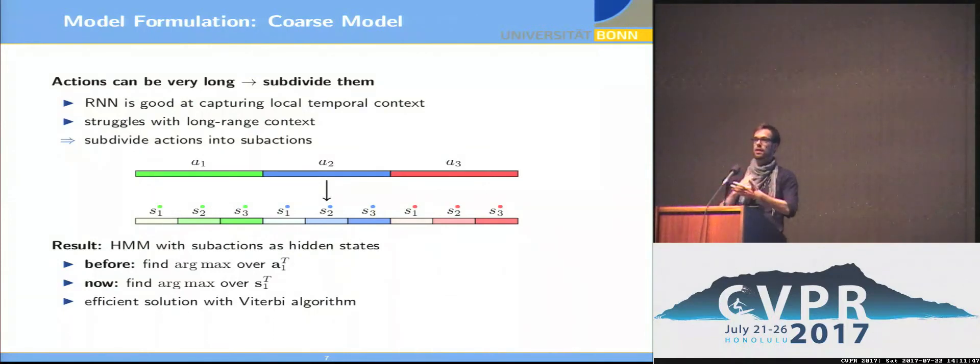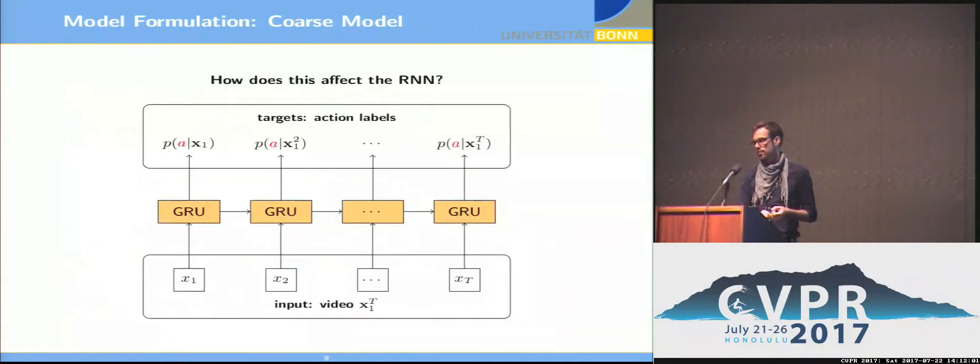Before we wanted to maximize over all the possible frame alignments on the action level. Now we want to do the same on the state level. This can be solved as soon as we have frame-wise probabilities for the actions using a simple Viterbi algorithm. So now that we have the coarse model, how does this affect the RNN? Before we wanted to predict action labels, P of A given X. Now of course we want to predict the sub-action labels. Nothing more changes.